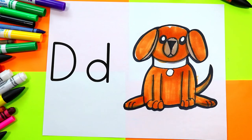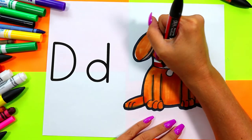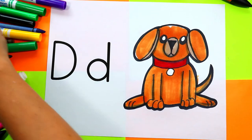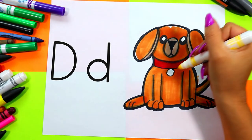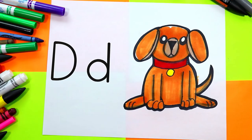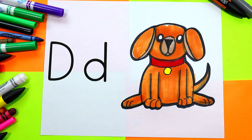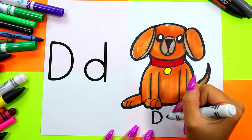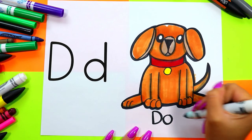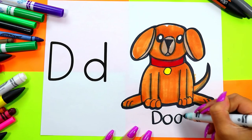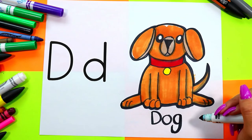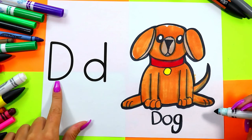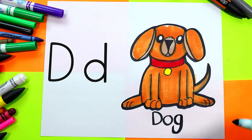I'm going to give my dog a red collar and I'm going to color the tag on the collar with yellow. Once you're done coloring in your dog your artwork is done. Dog is spelled D-O-G and dog begins with the letter D. Just like that your lovely dog artwork is done.